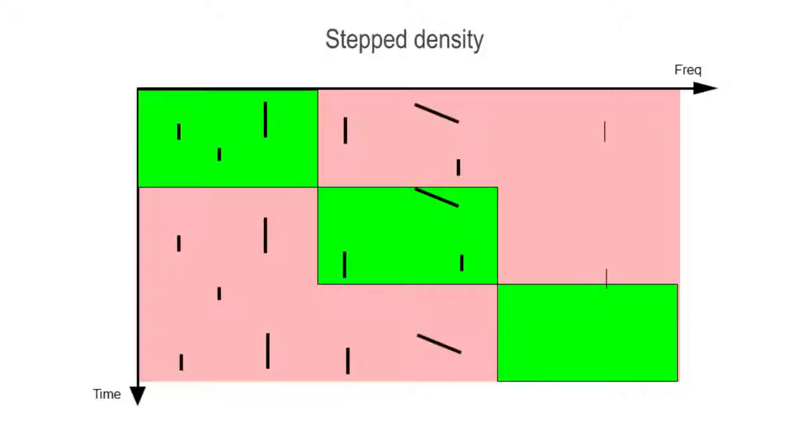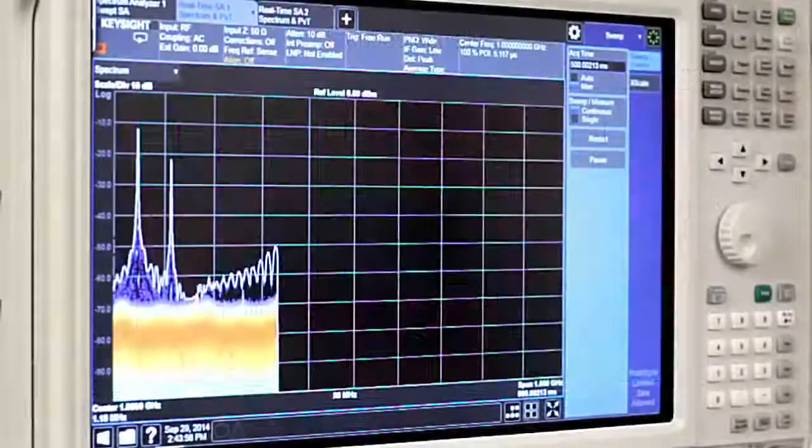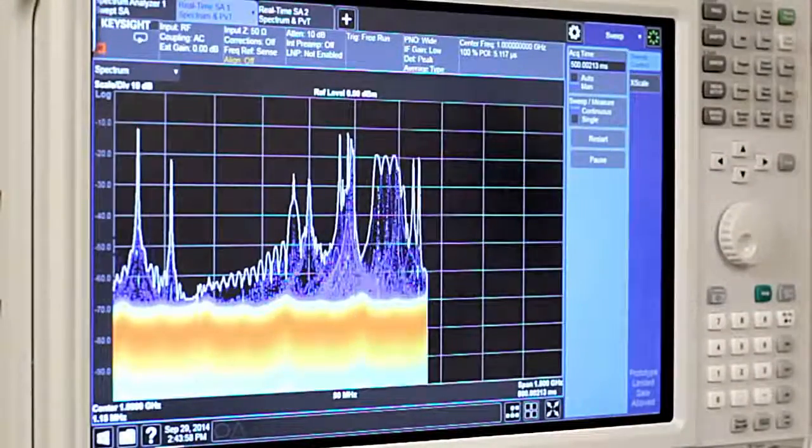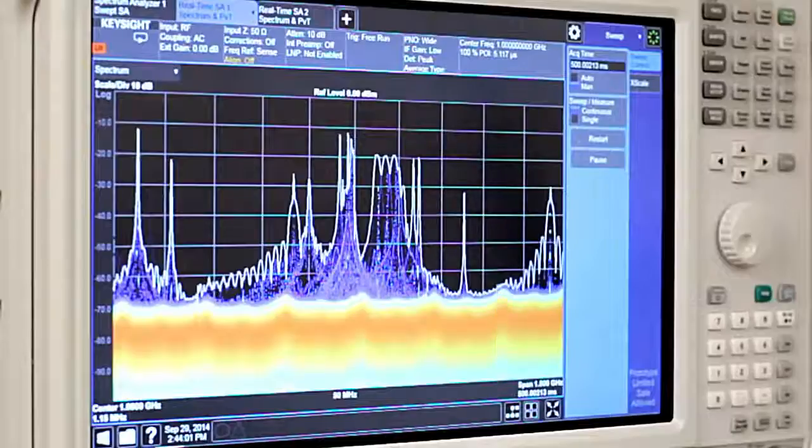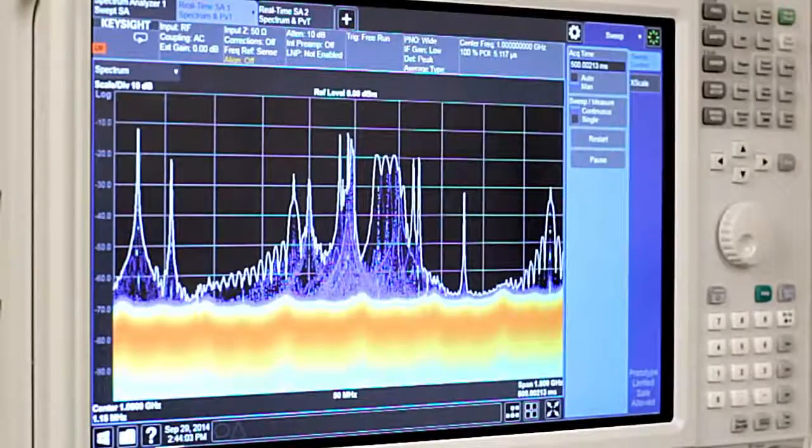The UXA can also use a real-time dwell technique called step density to visualize the full range of the signal environment. Looking at this in the UXA, we can see signals across 1.5 GHz of bandwidth. It can enable us to more easily understand a wide spectrum.